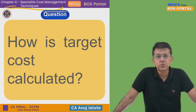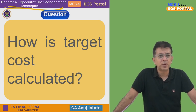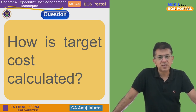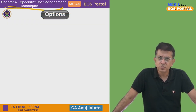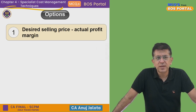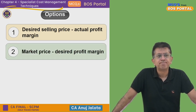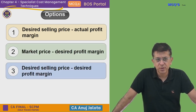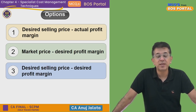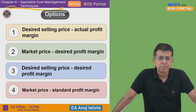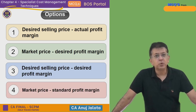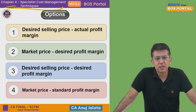With that, I start with Chapter 4 MCQs. The question for today is: how is target cost calculated? Four options — first: desired selling price minus actual profit; second: market price minus desired profit margin; third: desired selling price minus desired profit margin; fourth: market price minus standard profit margins.